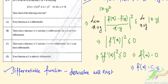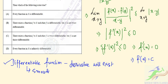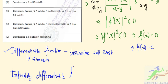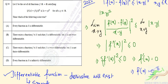Options B and C are incorrect. For option D, we check if the function is infinitely differentiable. A constant function is indeed infinitely differentiable because all of its derivatives are 0. So option D is also correct. For question 34, the correct options are A and D.